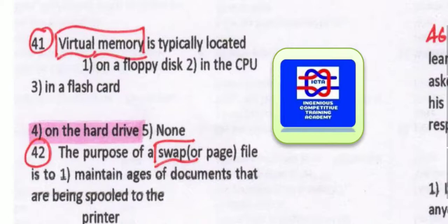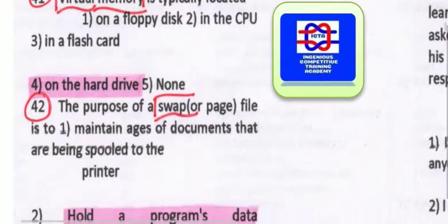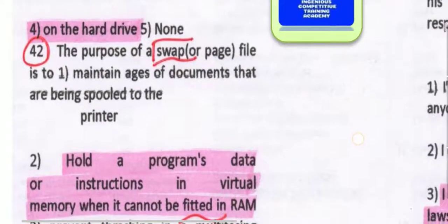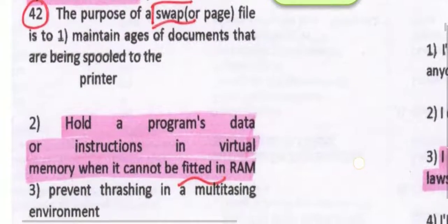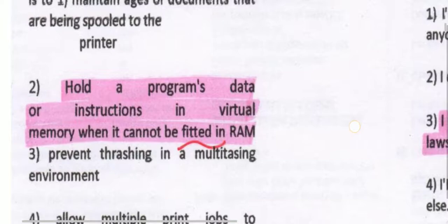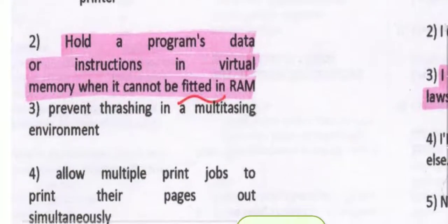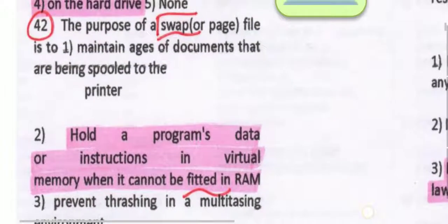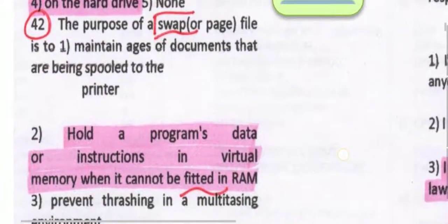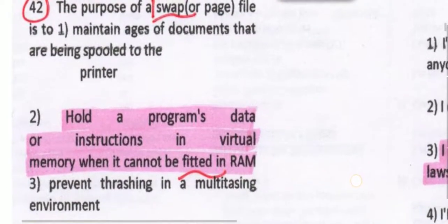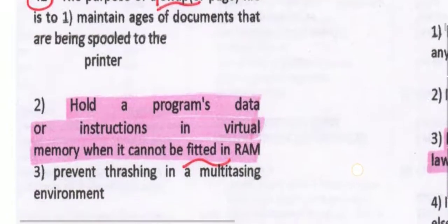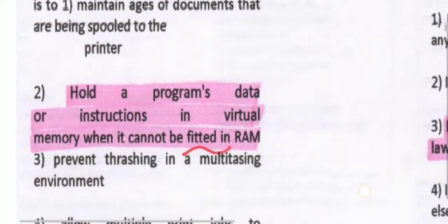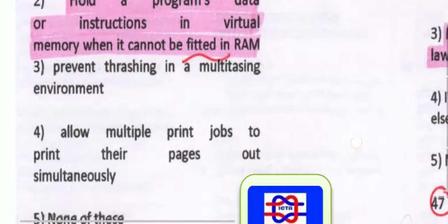The purpose of a swap file is to hold a program's data or instructions in virtual memory when it cannot be fitted in RAM. That is the purpose of the swap file — to hold a program's data or instructions in virtual memory when it cannot be fitted in RAM.